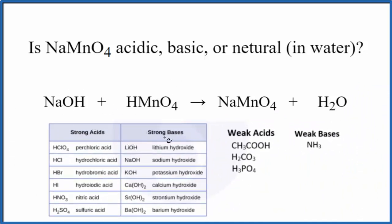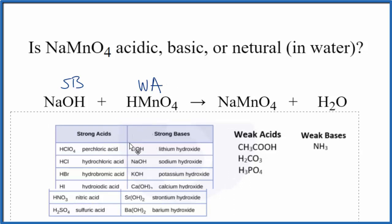We look, NaOH is a base and it is indeed a strong base, so let's write SB up here. And then permanganic acid, that's not on our list of strong acids, so that's going to be a weak acid.